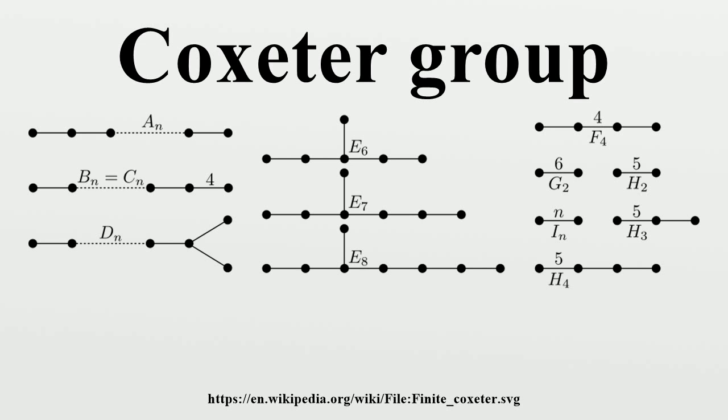Formally, a Coxeter group can be defined as a group with the presentation where for the condition means no relation of the form should be imposed. The pair where W is a Coxeter group with generators S equals R1 to Rn is called a Coxeter system.